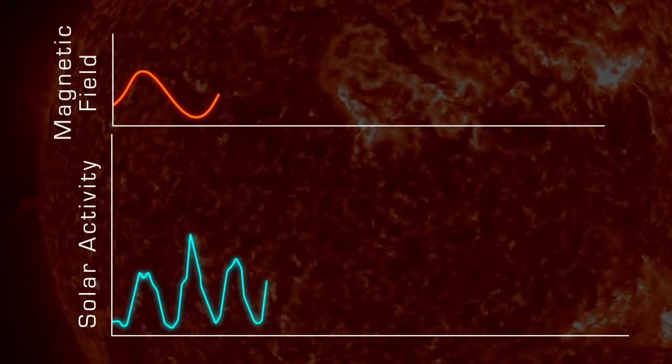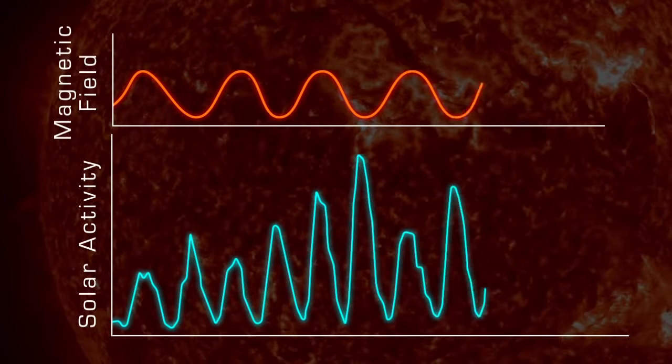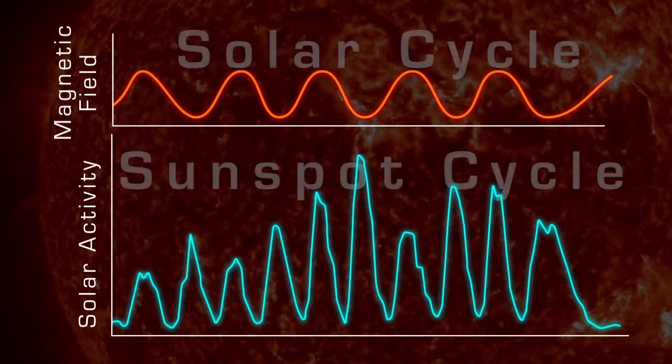The Sun's 11-year cycle is a symptom of a longer 22-year cycle called the solar cycle, or Hale cycle, which affects the Sun's magnetic fields.